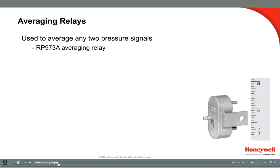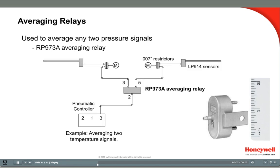Averaging relays are used to average two pneumatic pressure signals. There are three ports on the RP-973. The two inputs are 3 and 5, and the averaged output is port 2. The RP-973A can be used to average two LP-914 sensor signals to obtain an average temperature.